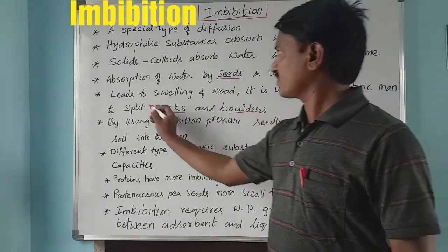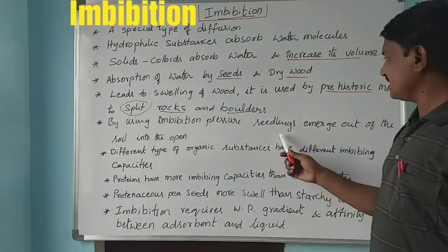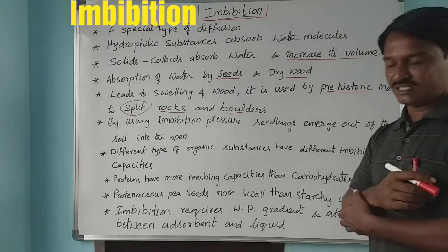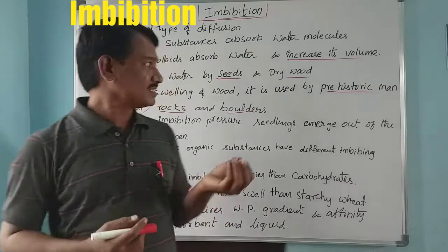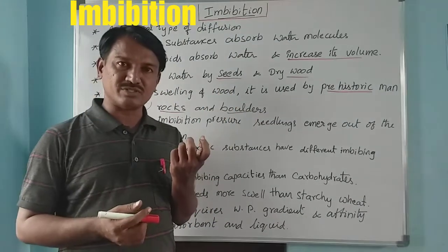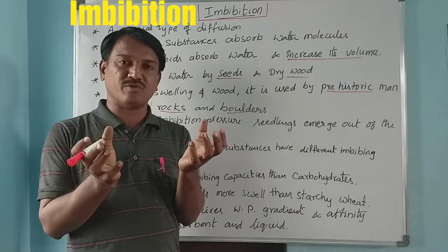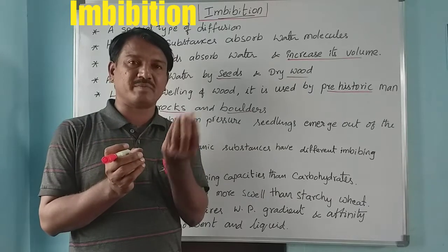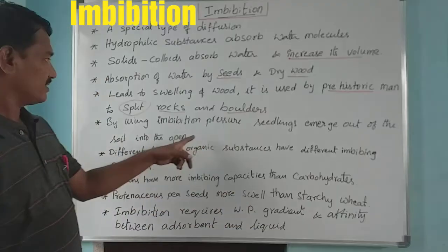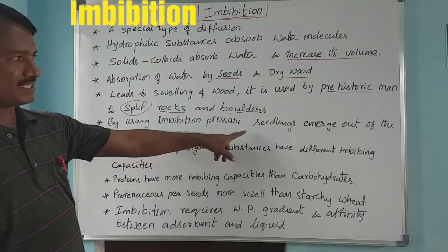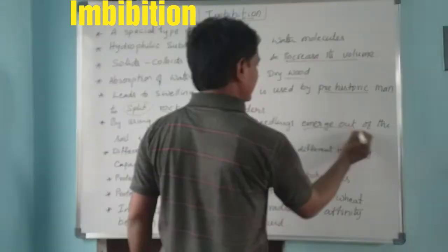By using imbibition pressure, seedlings emerge out of the soil. At the time of seed germination, the seed absorbs water molecules and undergoes swelling. The pressure generated by that swelling allows the seedlings to emerge out of the soil into the open. This is called imbibition pressure.